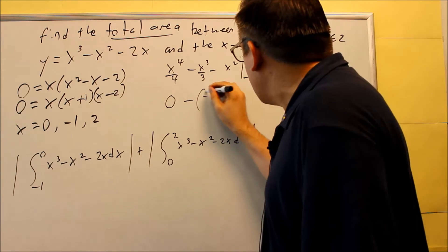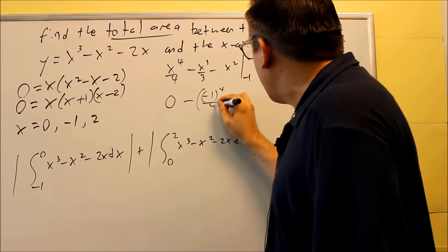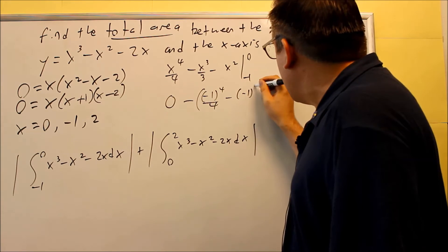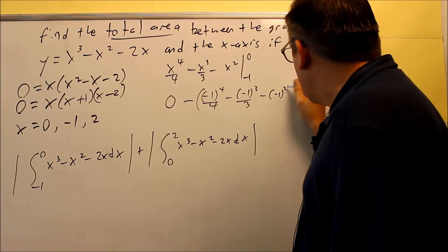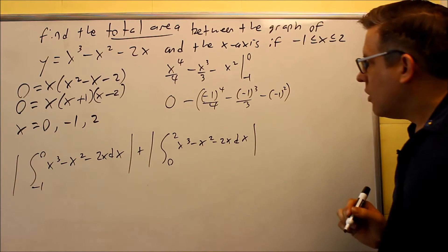Now let's put negative one in. Negative one to the fourth over four, minus negative one cubed over three, minus negative one squared. So because the minus sign is on the outside, we're going to first figure all this out and then we'll apply the minus sign to it.